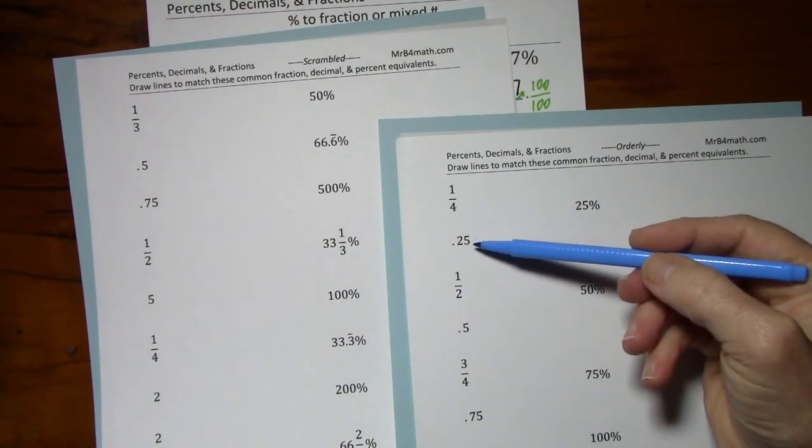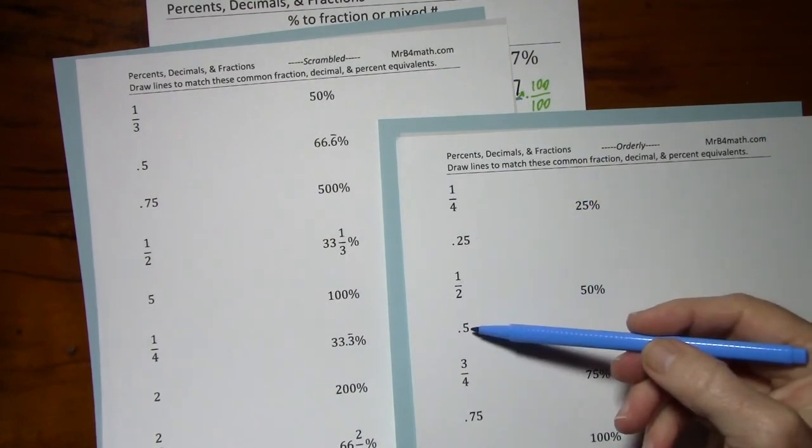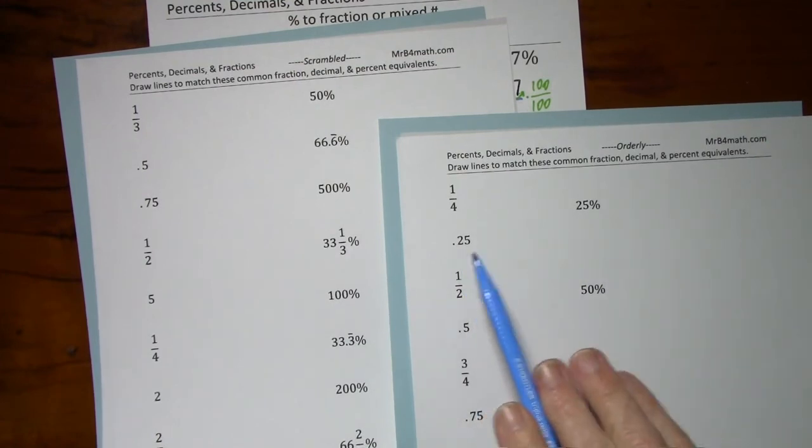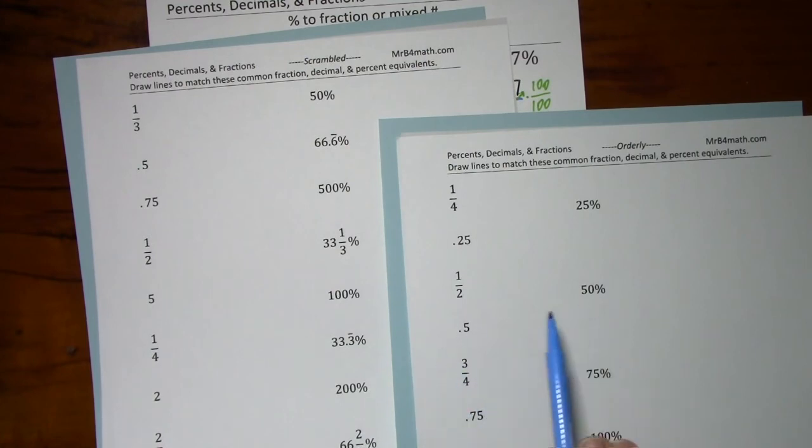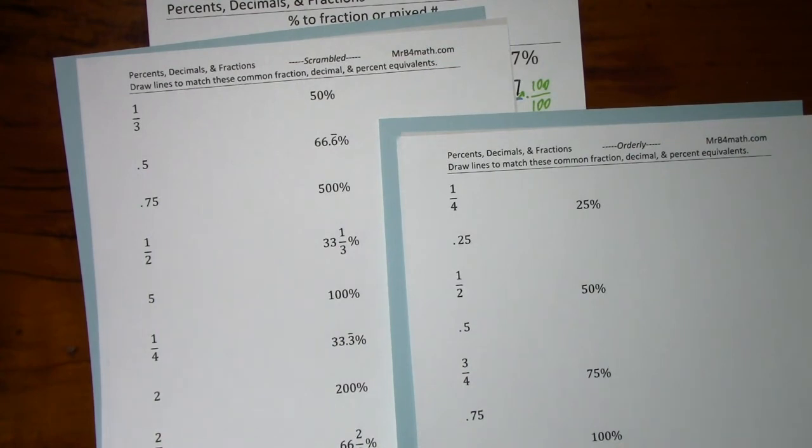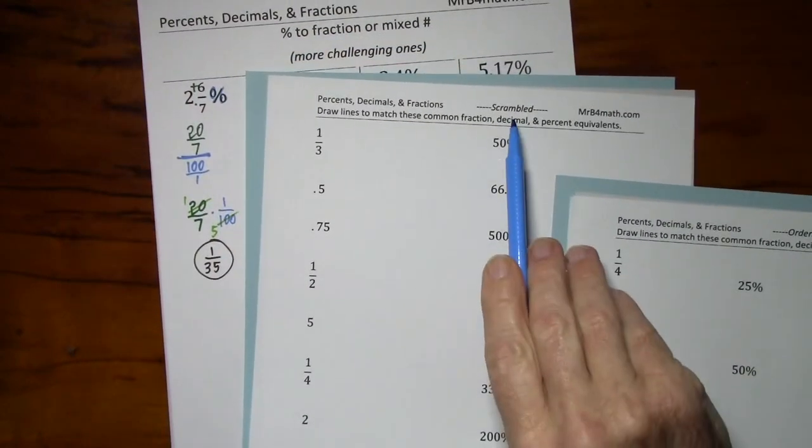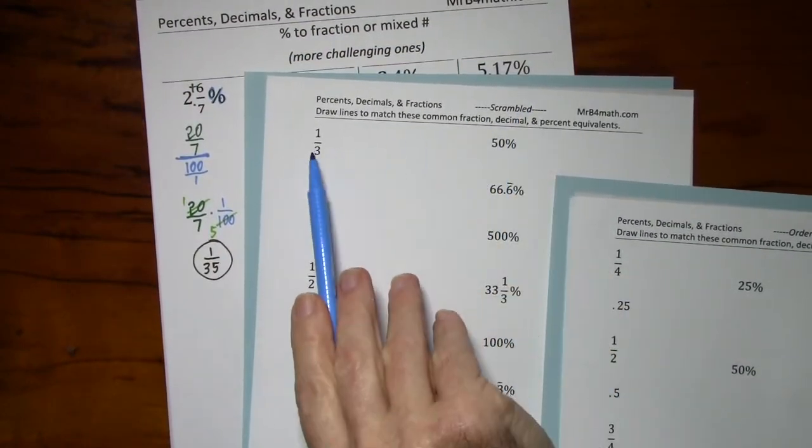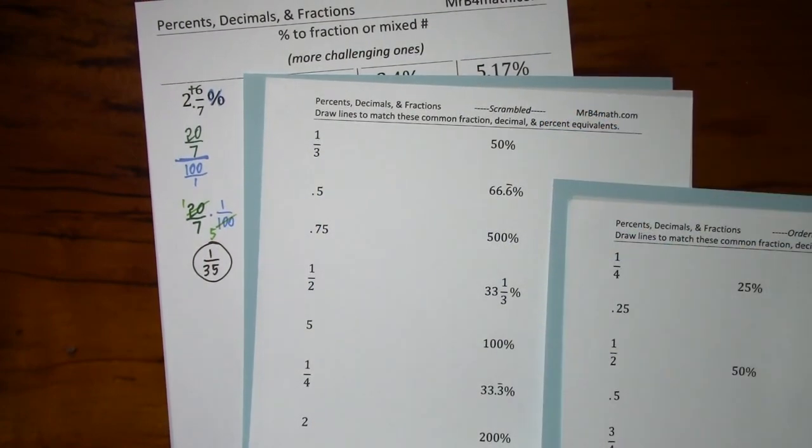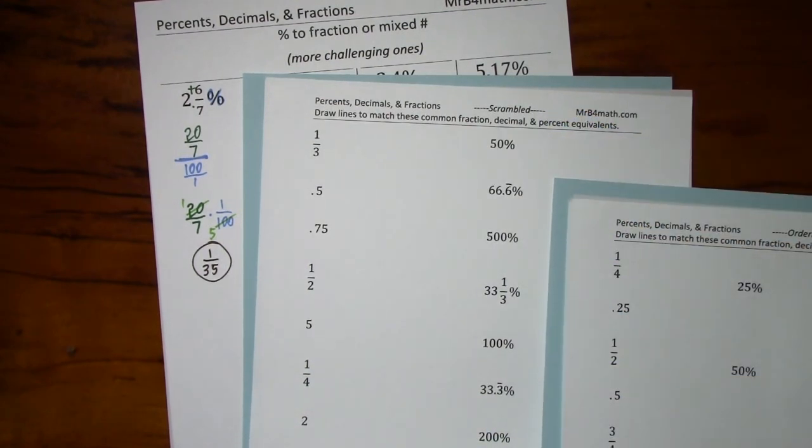The first one's orderly. So these values are placed in order. One-fourth is the same as 25 hundredths, one-half is the same as 5 tenths, etc., with their percentage equivalent. So you can focus on this and become a little more familiar with direct conversions without having to go through the math. And once you feel comfortable with that, I've given you a scrambled version where you're simply going to have to know one-third is one or two of these values along here. Five is one or two of these values along here.